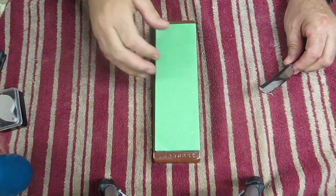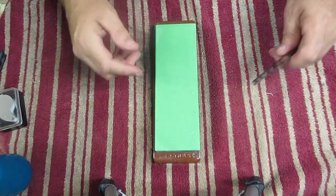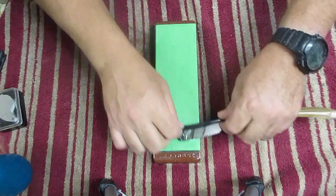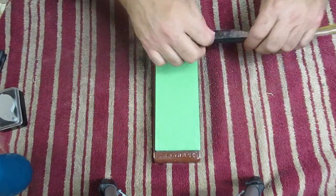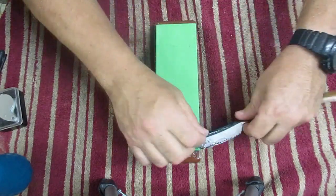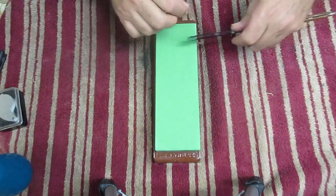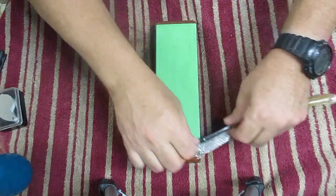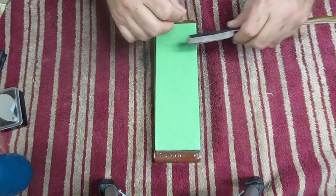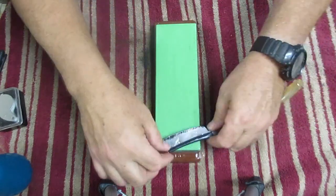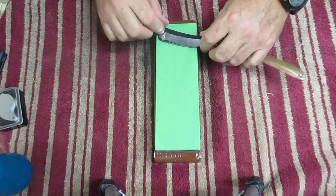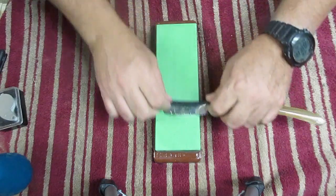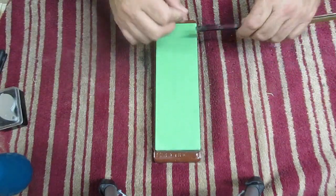What I'm going to do—this is a Chocera 400—I'm going to run this along this edge about 10 to 15 times just to see what it does.